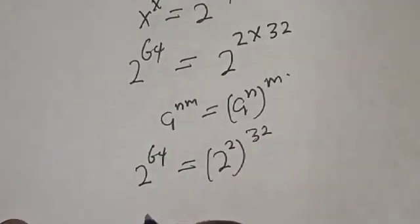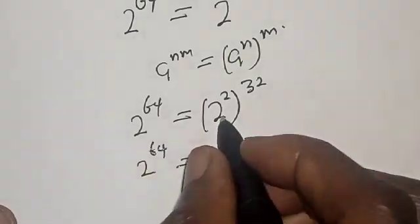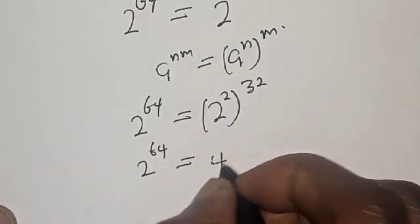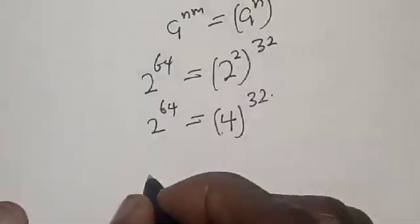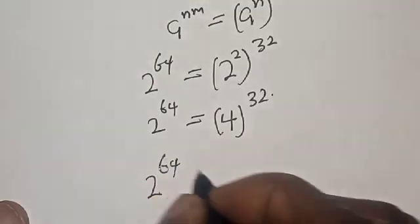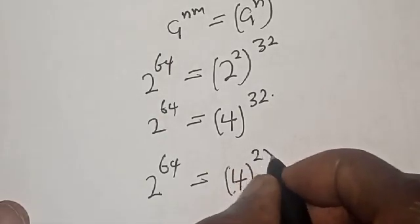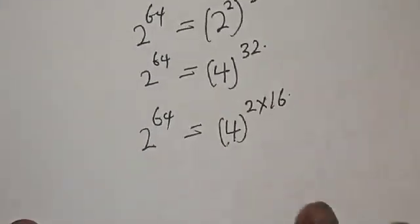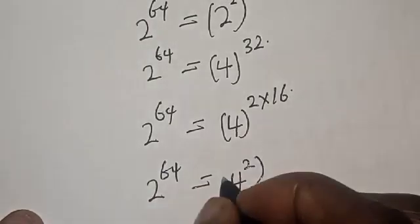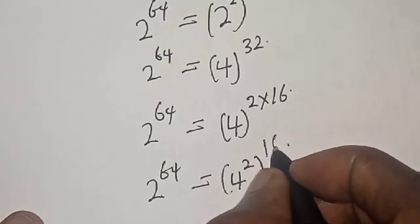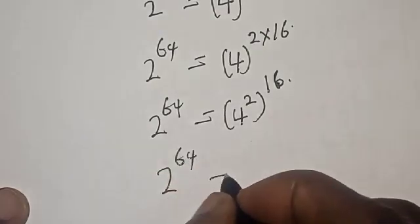Then we have 2 raised to power 64 is equal to 2 raised to power 2 — that is 2 squared, which equals 4 — raised to power 32. Now we have 2 raised to power 64 is equal to 4 raised to power 32, which equals 4 squared — that is 16 — raised to power 16. So 2 raised to power 64 is equal to 16 raised to power 16.